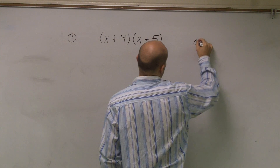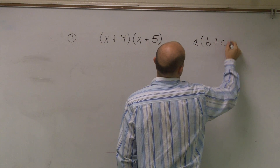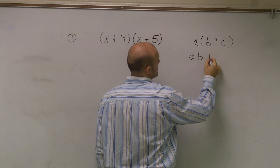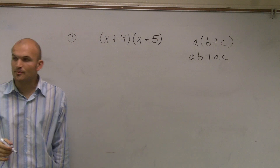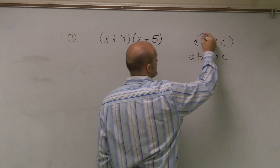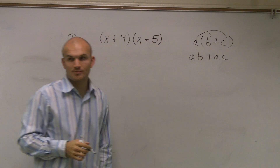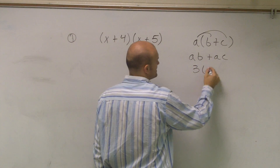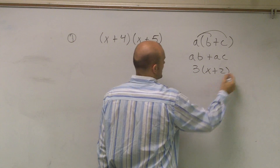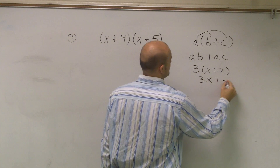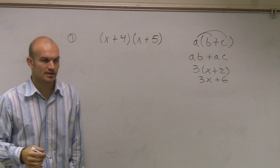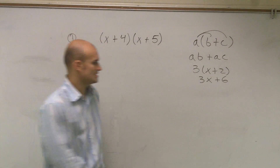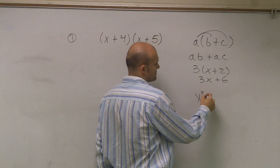The first thing we need to remember is the distributive property. The distributive property states that whenever you have a number outside of parentheses, that number is going to multiply times both of those terms. So for example, if I had 3 times (x plus 2), that equals 3x plus 6, because 3 times 2 is 6 and 3 times x is 3x.